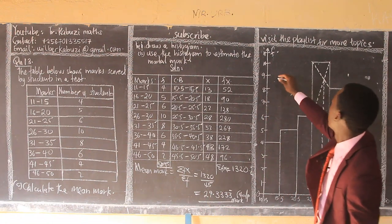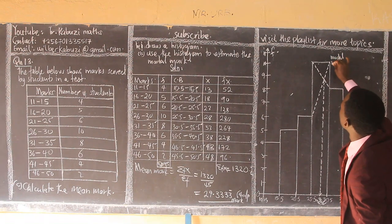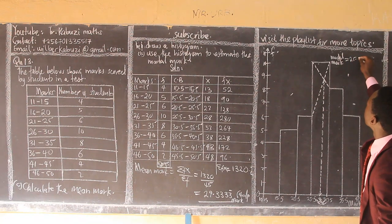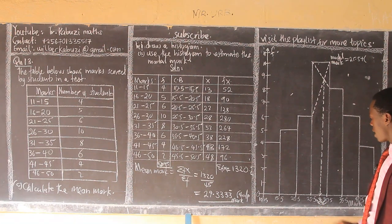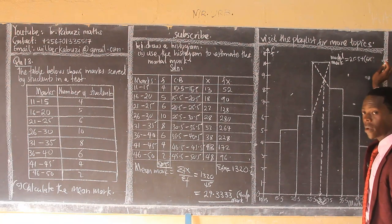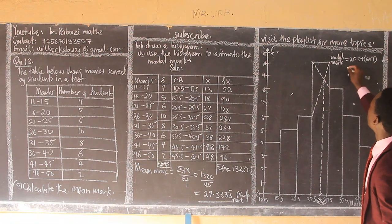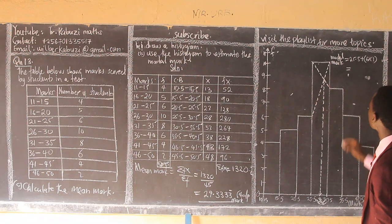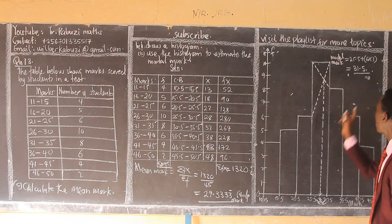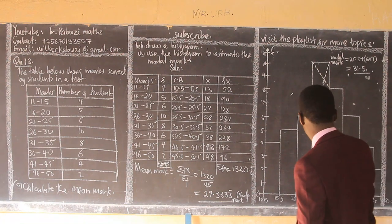So now from there, I'm going to get my modal mark. It's okay to put your working or your solutions here. So I can put here my modal mark. Modal mark is going to be, you see it's going to be 25.5 plus, I'm seeing here I'm having like 60 small squares. So I'm using two centimeters to mean that each small square represents one. So my modal mark is going to be 27.5. So that is my modal mark.